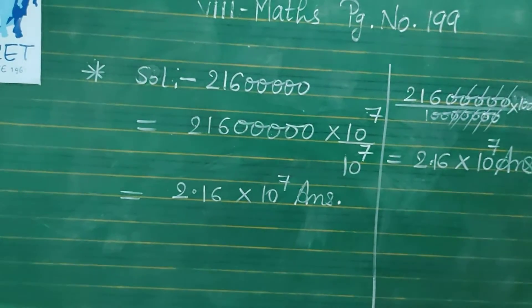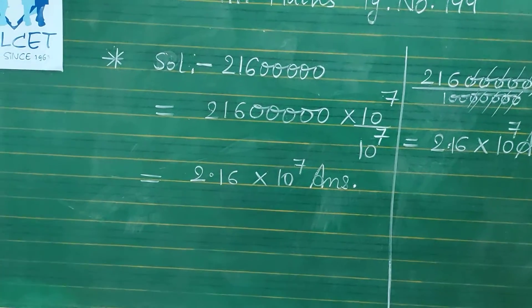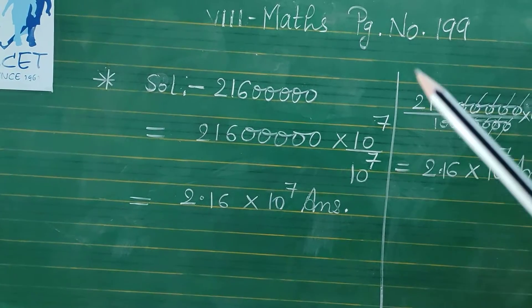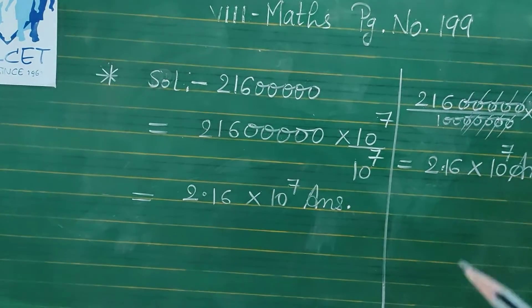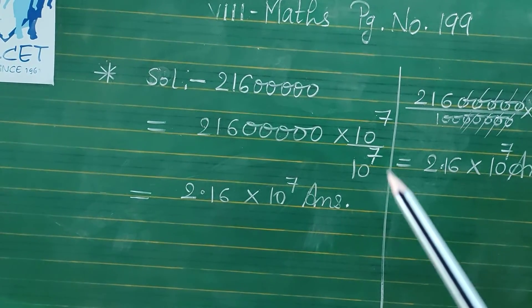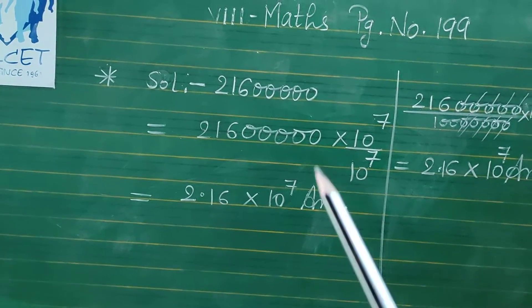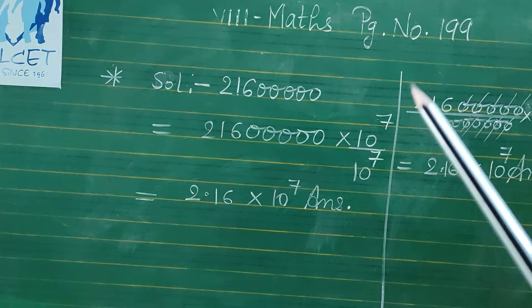We want decimal should be moved left hand side before 7 digits. So we are multiplying 10 to the power 7 and divide by 10 to the power 7. So left hand side, in the denominator exponents we will use. So 2.16 times 10 to the power 7.